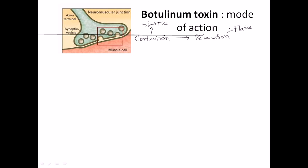The toxin of botulinum causes flaccid paralysis, and the toxin secreted by tetanus bacteria causes spastic paralysis. Both are forms of paralysis — inability to control muscle movements — but they act differently because they block different types of neurotransmitter secretions.